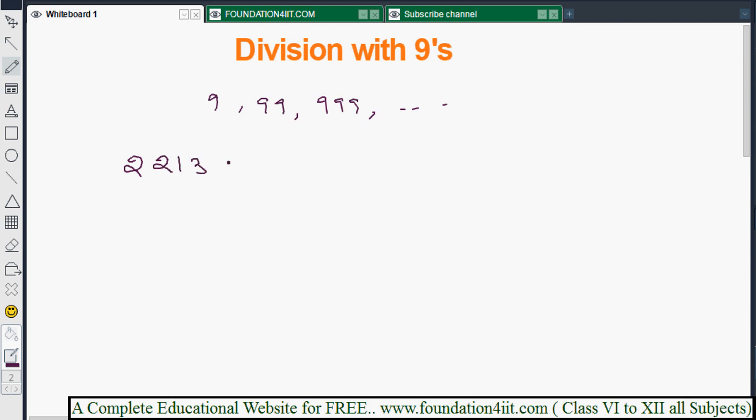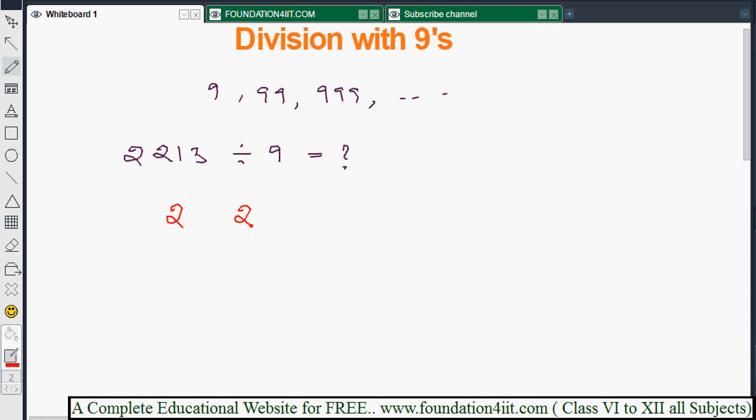The question is 2213 divided by 9 equals dash. Now see the method. First of all, I'll explain it elaborately. With a little practice, you'll do it very fast. The number is 2, 2, 1, 3. I need to divide with 9.